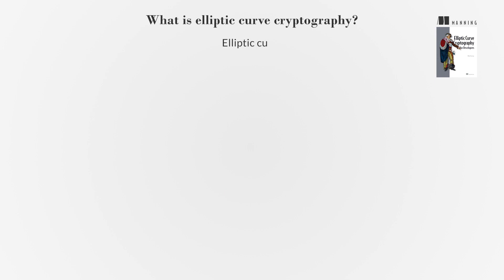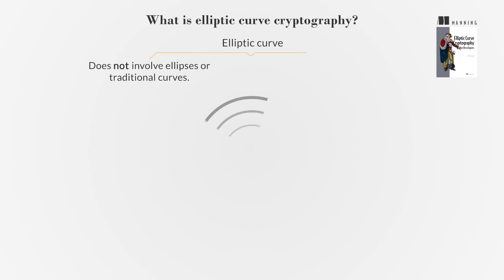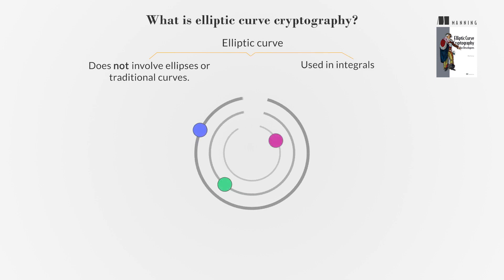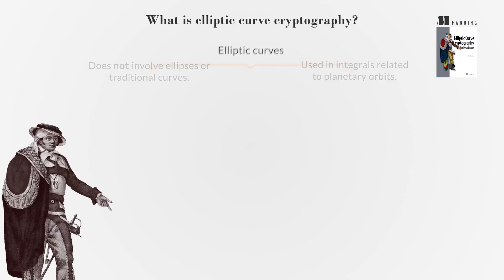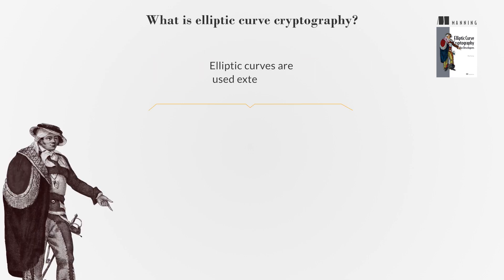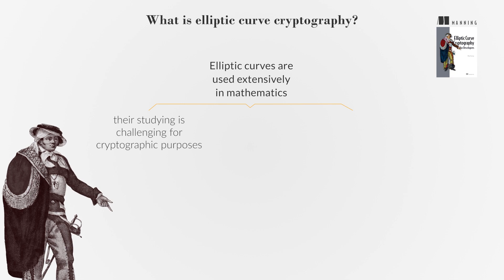The name elliptic curve in cryptography may seem misleading, as it doesn't involve ellipses or traditional curves. It originates from historical use in integrals related to planetary orbits. Elliptic curves are used extensively in mathematics, which can make studying them challenging for cryptographic purposes.